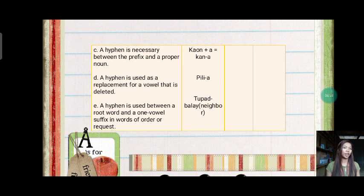Pili dash and a. Last is a hyphen is used between a root word and one vowel suffix in words of order or request. Tupad balay. Meaning neighbor. Sapit na balay.